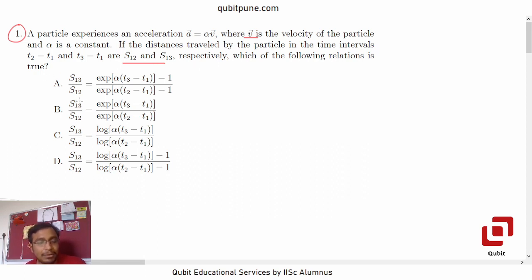We are required to find the ratio of the distances travelled between t3 and t1 and between t2 and t1. Notice that acceleration is collinear with velocity. That is what this relation tells us.